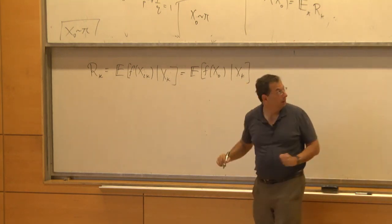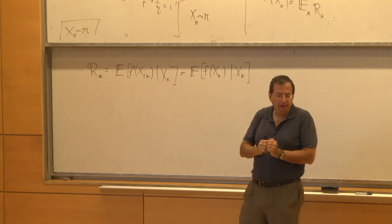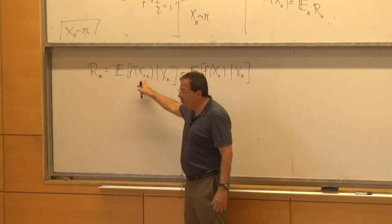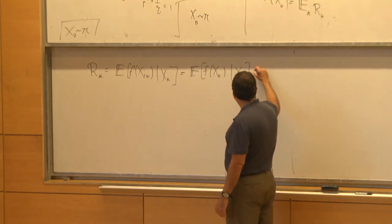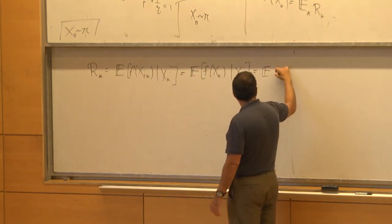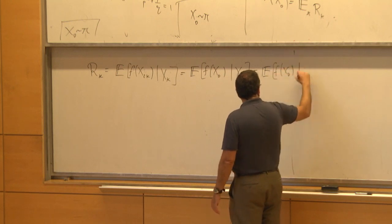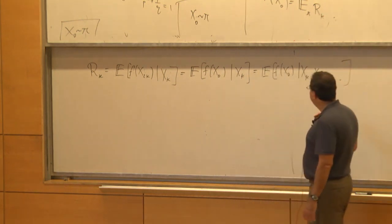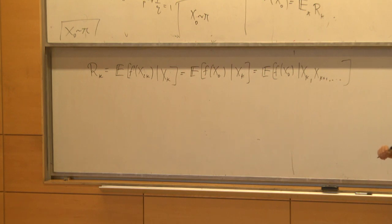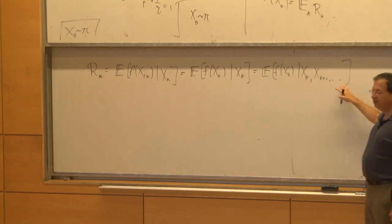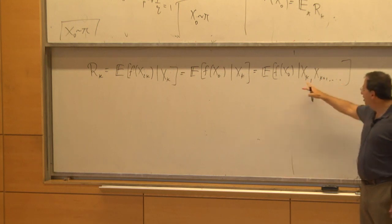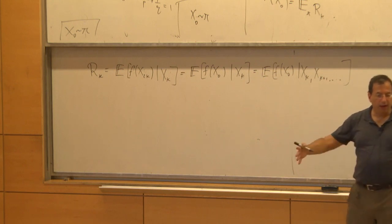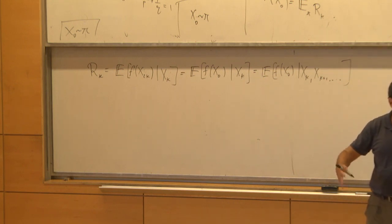Here we use reversibility: running the chain forward has the same distribution as running the chain backwards. So the law of F(X_0) given X_K is the same as the law of X_{2K} given X_K. Using the Markov property, conditioning on X_K is the same as conditioning on X_K, X_{K+1}, and so on — the whole future. As K grows, we're conditioning on less and less information. That's a reverse martingale.